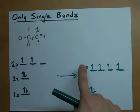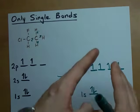This is the hybridized electron configuration for a carbon that has only single bonds. 1, 2, 3, 4 hybridized orbitals, all sigma bonds.